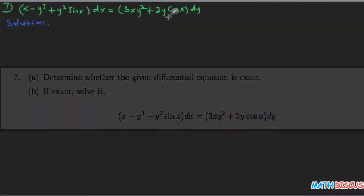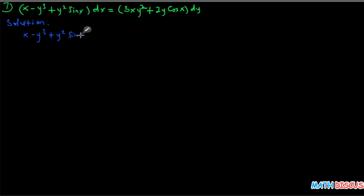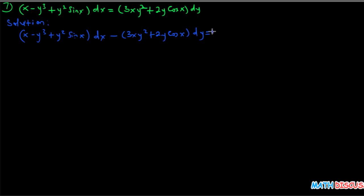We are given a differential equation and told to confirm if it is an exact differential equation, and then solve it. To check, I'll first rewrite it in standard form: (x minus y cubed plus y squared sine x) dx plus (negative 3xy squared plus 2y cosine x) dy equals zero.